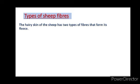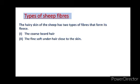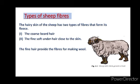The hairy skin of the sheep has two types of fibers that form its fleece. The first type is the coarse beard hair — coarse meaning rough. The second type is the fine soft under hair, close to the skin. These are the two types of fibers that form the fleece of sheep. The fine hair provides the fibers for making wool.